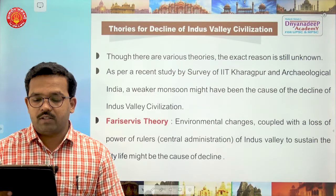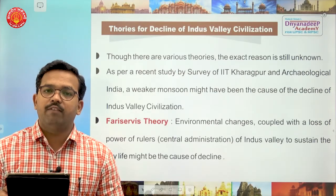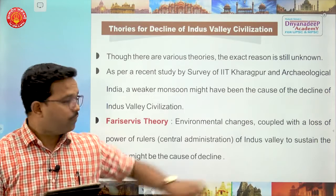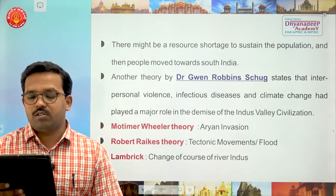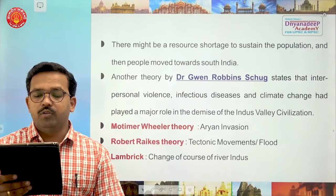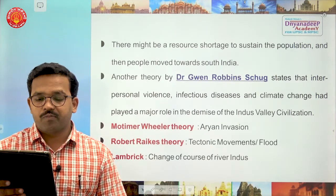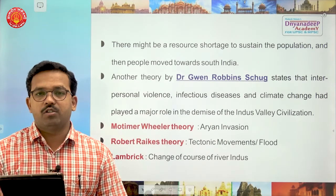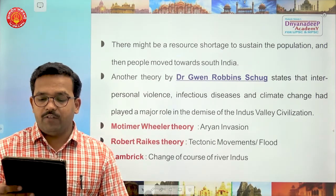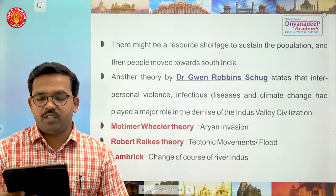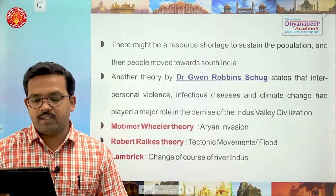Another theory says environmental changes coupled with the loss of power of rulers — that is, weakening of central administration — led to the decline. There might also have been resource crunch and shortage to sustain the population, and people moved toward South India. Another theory by Dr. Vats states that interpersonal violence, infectious diseases, and climate change played a major role in the demise of Indus Valley Civilization.